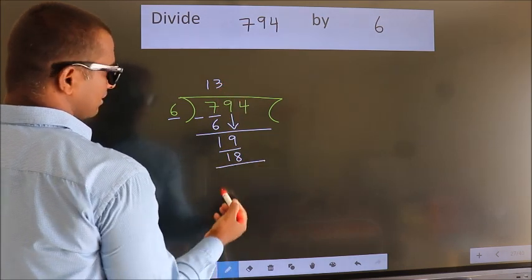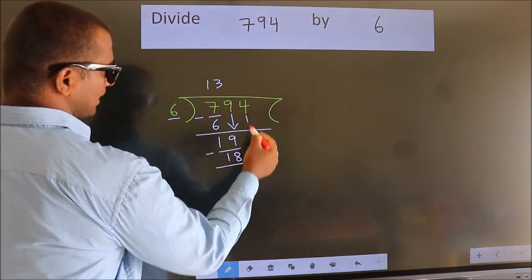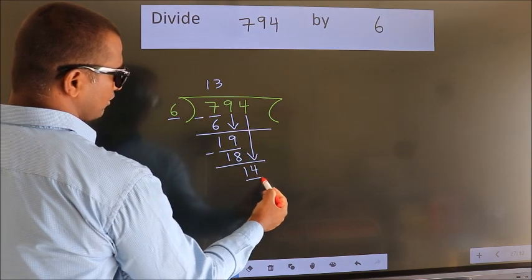Now we subtract. We get 1. After this, bring down the beside number. So 4 down, so 14.